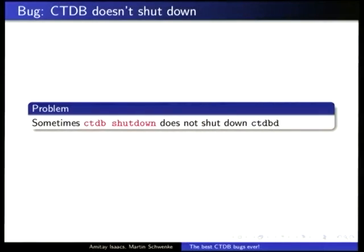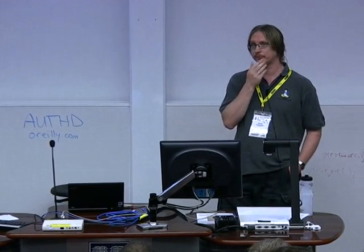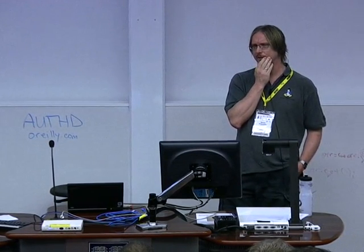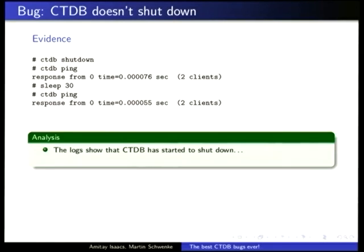The amazing thing about that performance analysis is that with perf, anyone could do that — it tells you what function the problem is in; none of that was rocket science. The next two bugs are rocket science. We've got the CTDB shutdown command, and it's meant to shut down CTDB. What goes wrong? We do CTDB shutdown, we run CTDB ping and it says yes, still there. We wait 30 seconds, ping again — still here. When we look in the logs, the message got there, it started shutting down, got up to somewhere, but never finished.